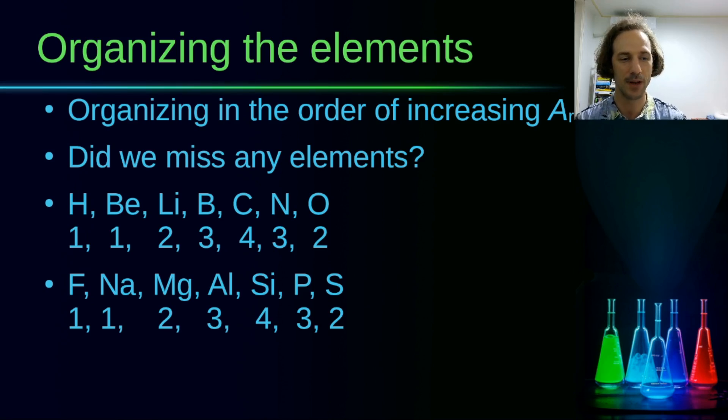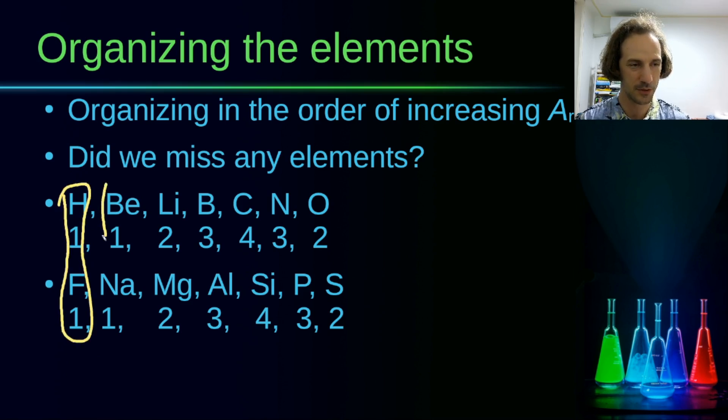The valence shows how many other atoms the atoms of this element want to bond with. And there are also some physical characteristics that are similar. If we take a look at hydrogen and fluorine, for example, both are gases. Beryllium and sodium both are relatively reactive metals. They had similar physical and chemical characteristics in some kind of periodic sense.